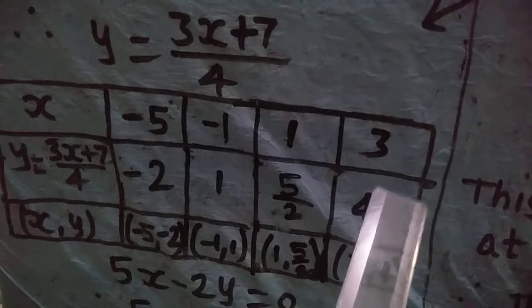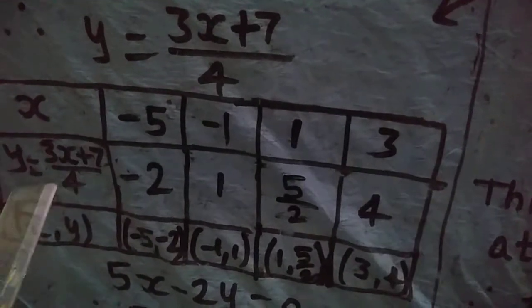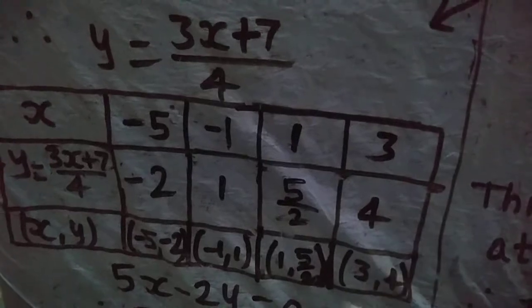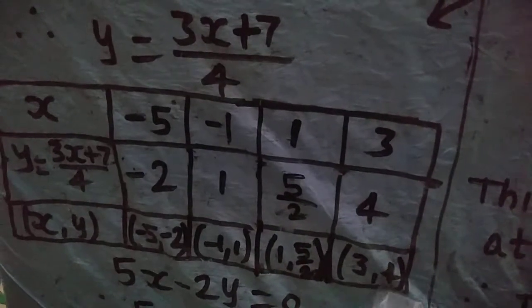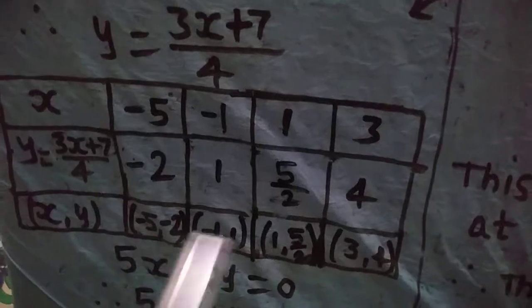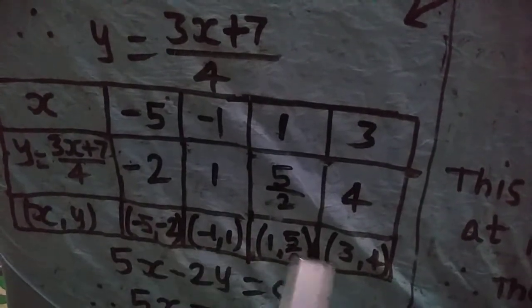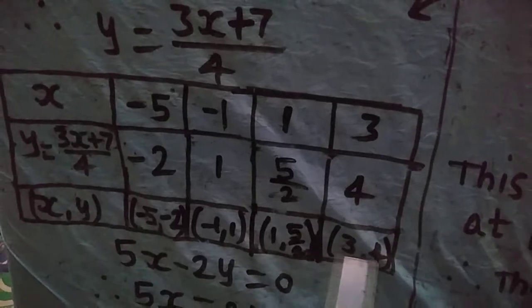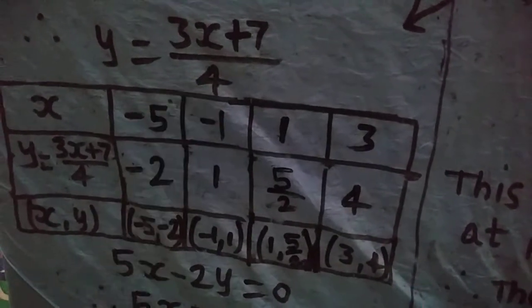When x = 3, we get y = 4. So the coordinates are (3, 4). In this way, we get all four points of the first linear equation.